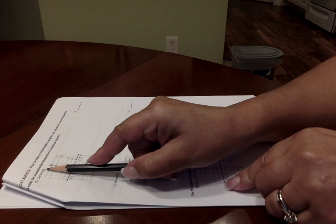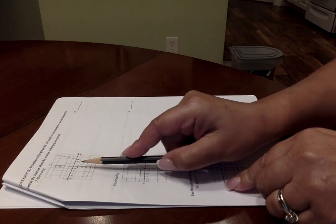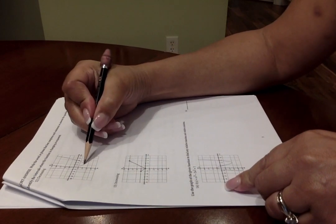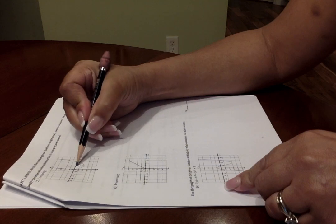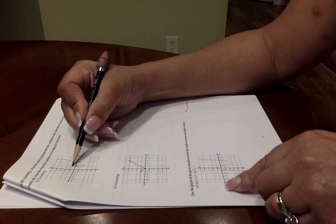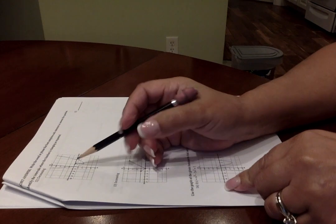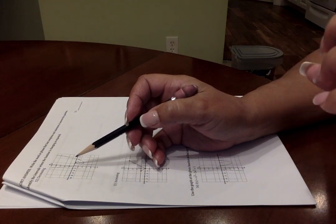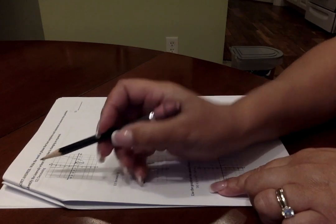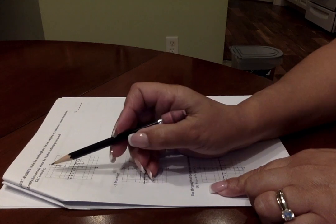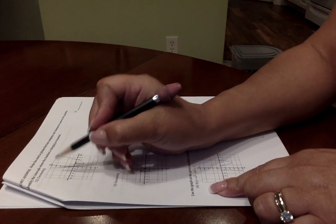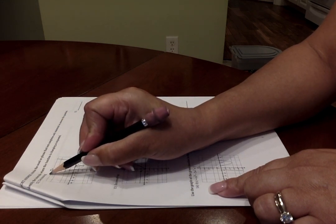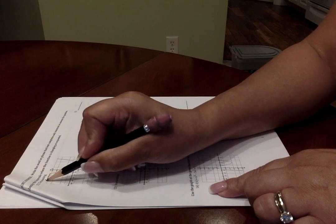As you start on the leftmost side of the graph, traveling along that curve, you are falling, falling, falling, all the way until you get to what appears to be an X value of 3. One of the downfalls of giving an answer regarding decreasing or increasing is that students forget that they can only use the X values to name the interval.